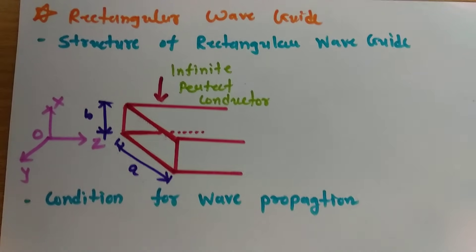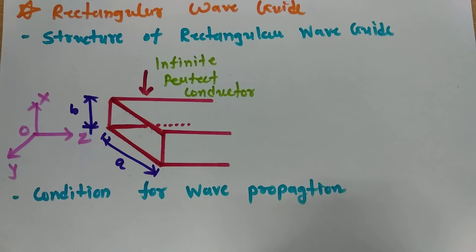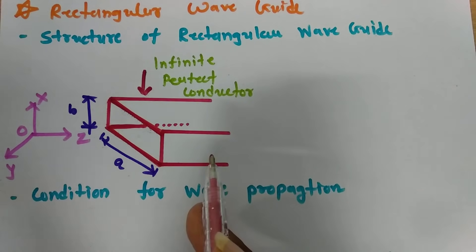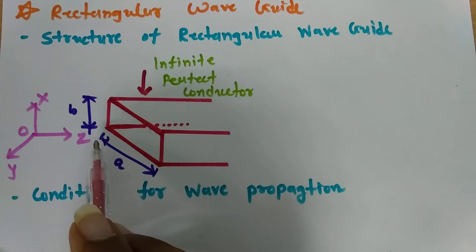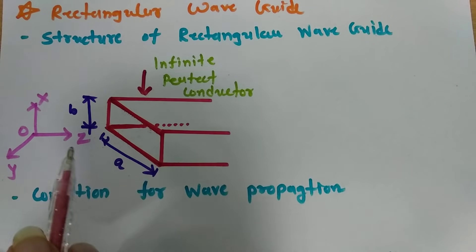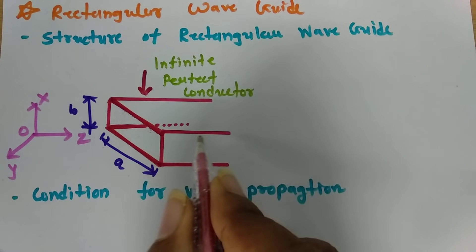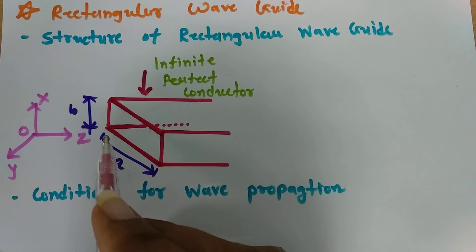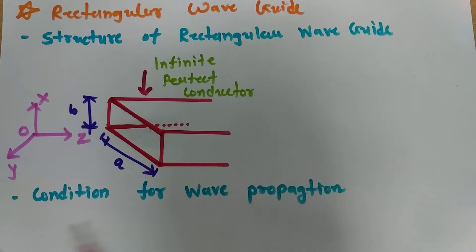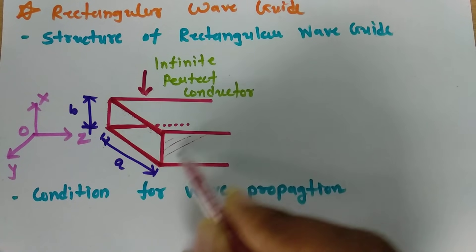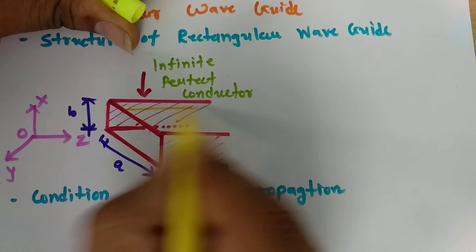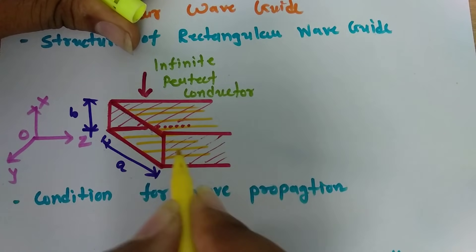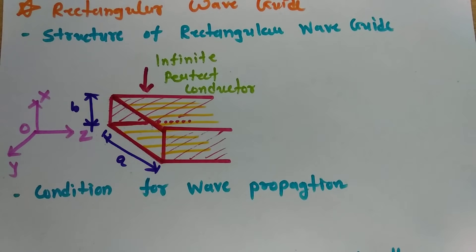Let us begin with the structure of rectangular waveguide. A rectangular waveguide has boundaries from all directions so that electromagnetic waves can propagate inside by reflection from both sides. For example, if the electromagnetic wave is propagating along the z direction, then there are perfect conductors placed with respect to x orientation as well as y orientation. Both surfaces reflect electromagnetic waves, resulting in the traveling of electromagnetic waves through the rectangular waveguide.